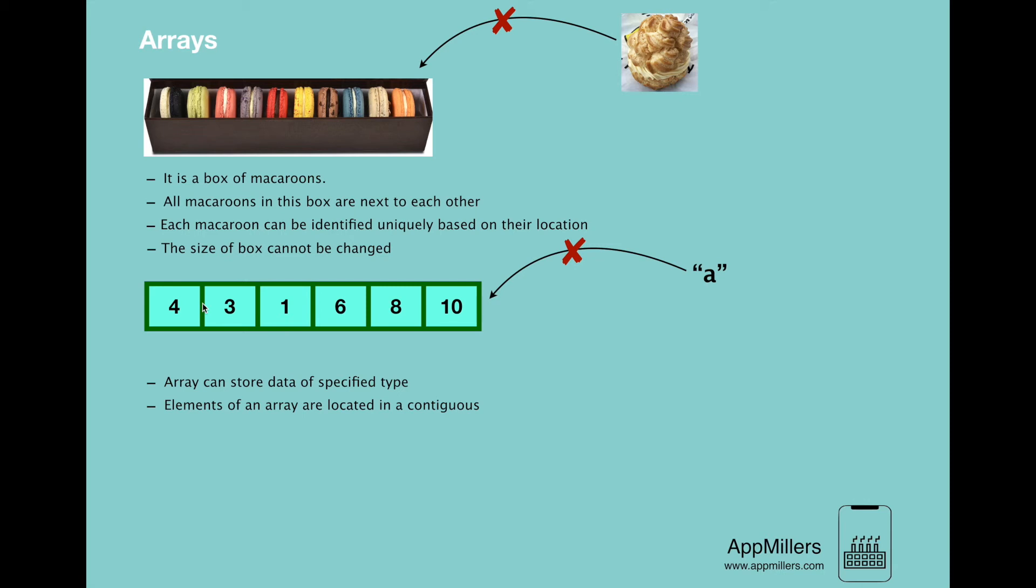So the next property is each element of array has a unique index. We have unique locations for these macarons and we have unique indexes for each element of array. So if we want to access, for example, this element over here, we need to access through index of 2.